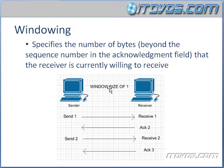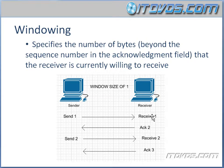For example, if we have a window size of one, this means the sender can only send one segment and then it has to wait for an acknowledgment before it can send another segment. So in this example, the sender sends segment number one, the receiver receives it and sends an acknowledgment back. Since the sender has gotten the acknowledgment, it can send segment number two, the receiver receives number two and sends an acknowledgment back.